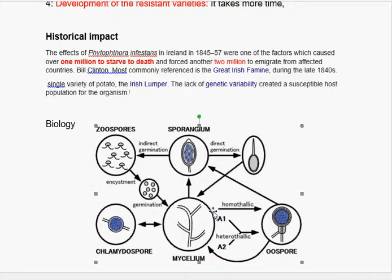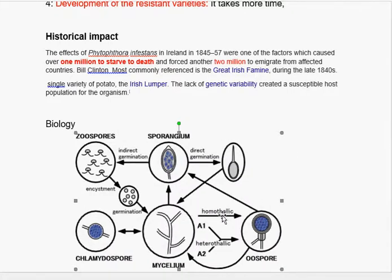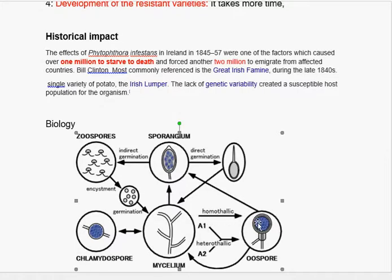This mycelium sometimes has two different mating types — one is called homothallic and the other is called heterothallic. In the case of heterothallic strains, you can see there are two strands: A1 and A2. When these combine together, they form oospores. Sometimes a homothallic strand can also form oospores on its own. This oospore stays in the soil, and if there are favorable environmental conditions, it again grows into mycelium. Sometimes mycelium forms chlamydospores, which are also resistant structures.